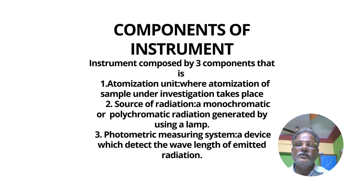The source of radiation is a monochromatic or polychromatic radiation generated by using a lamp. The photometric measuring system is a device which detects the wavelength of emitted radiation.